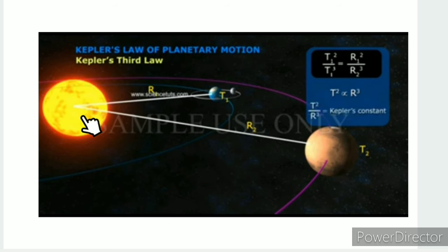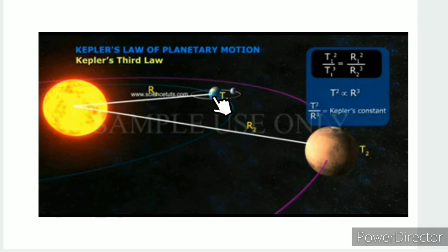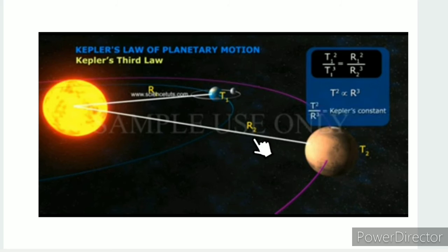Here we have the sun and the planet. The planet follows an elliptical path. The distance between the sun and the planet is the mean distance R. This mean distance R is used in the formula for the time period T.